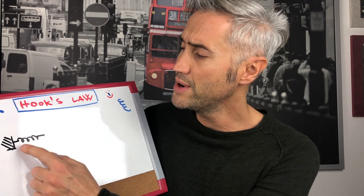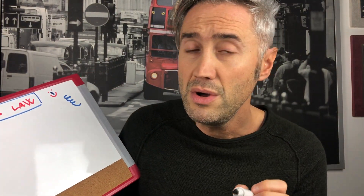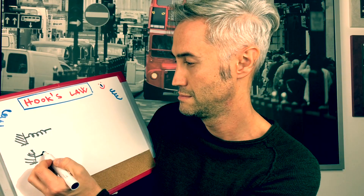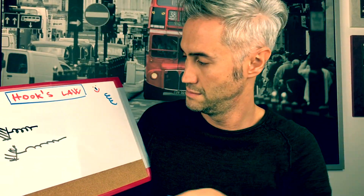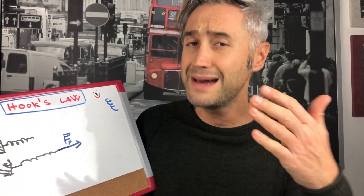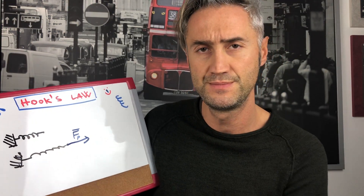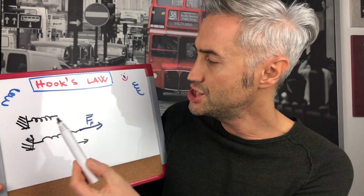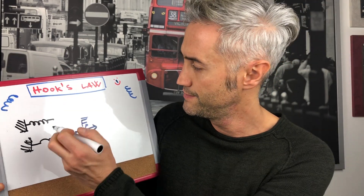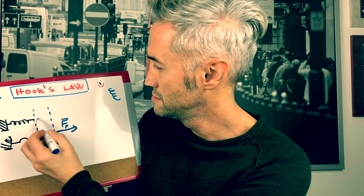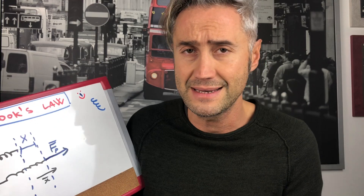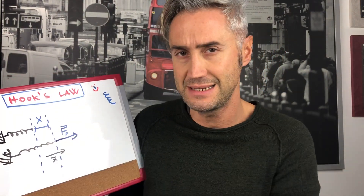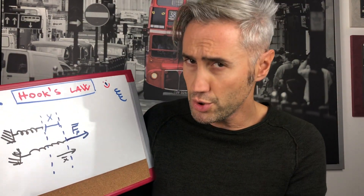Here we have a horizontal spring, and that is the natural length of the spring. Now we are going to apply a force to stretch the spring towards the right. We are going to call that force F_P, which is positive, and the displacement of the spring is also positive — we stretched it a distance we call X.